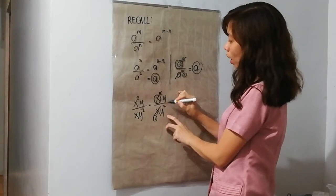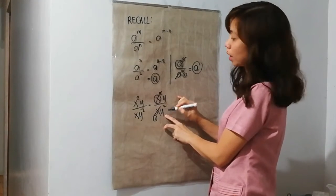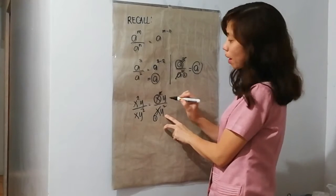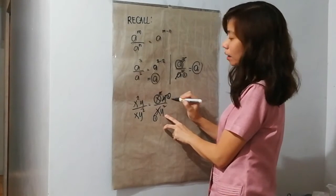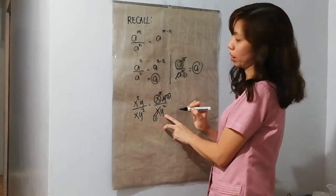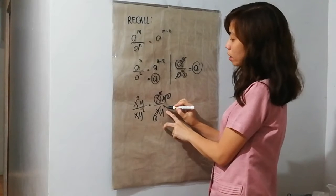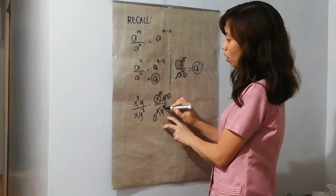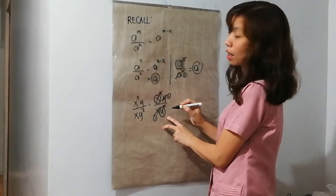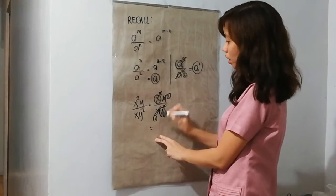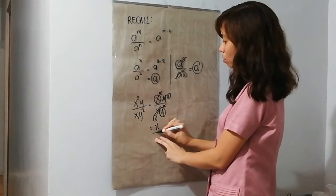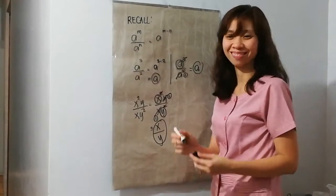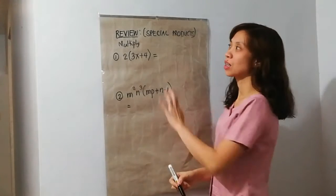And then, y over y squared. Ang pinakamalit na exponent is y. So, ito yung may matitirahan na lang na 1. y squared — 2 minus 1, yung exponent, meron ka pang matitirang y. So, alin ang natira? x over 1.